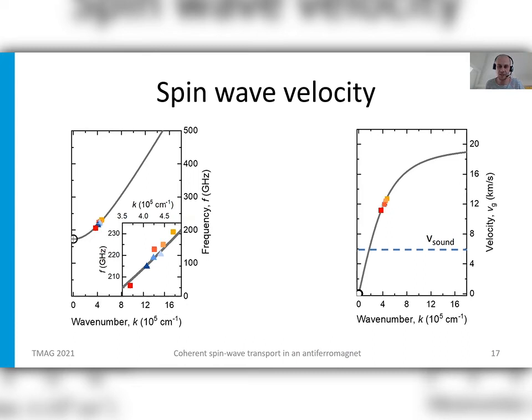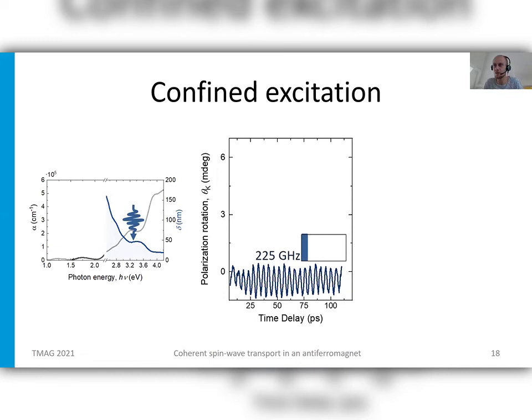As some sort of sanity check, to see if this hypothesis that we have, that it is confinement of the excitation which is the key ingredient to generate these coherent spin waves, we can actually confirm this by changing this confinement. In the first experiment we generate the spin waves by exciting the sample at the photon energy where the penetration depth is very small, and indeed the resulting polarization rotation of the probe pulse shows this 225 gigahertz oscillation. Now we're changing the pump photon energy. By going to a different energy closer to the band gap, we actually increase the penetration depth, so the excitation is confined over a much larger spatial scale. Indeed, if we look at the resulting magnetic dynamics obtained in this geometry, we see that there is almost no signal.